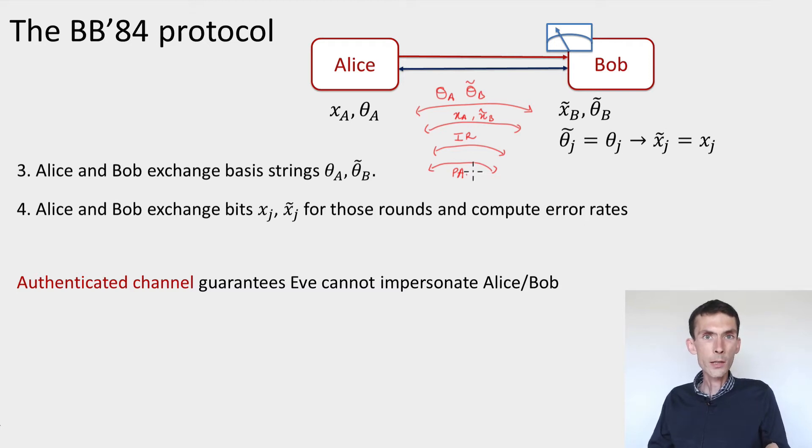One of the assumptions that we made is that the information that's exchanged on this channel is public, meaning Eve has access to it, but it's authenticated in the sense that it cannot be corrupted by Eve. So Alice, when she receives a message, has the guarantee that the message has been sent by Bob and it's not a fake message that was created by Eve.